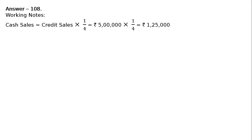This is problem 108. From the following information, calculate the gross profit ratio. Working notes: cash sales is equal to credit sales multiplied by one-fourth, because cash sales is one-fourth of credit sales. Hence, rupees five lakh multiplied by 1/4 gives us cash sales.